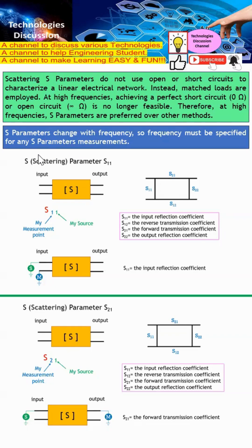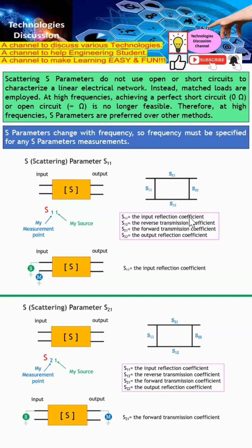Now I'm going to share how to better remember S-parameters. For S11, the second digit indicates where the source is, and the first digit indicates where the measurement is. In this case, the source is at port 1 and the measurement is also at port 1, so this is known as S11, which is the input reflection coefficient.